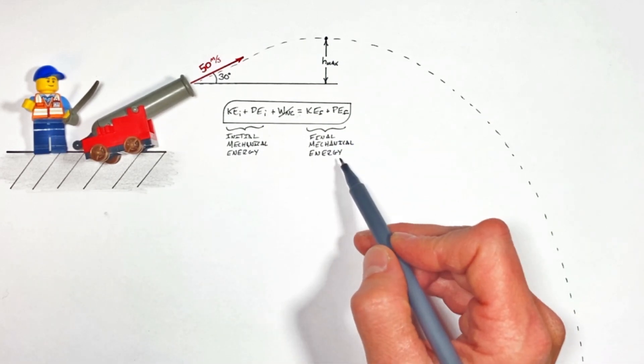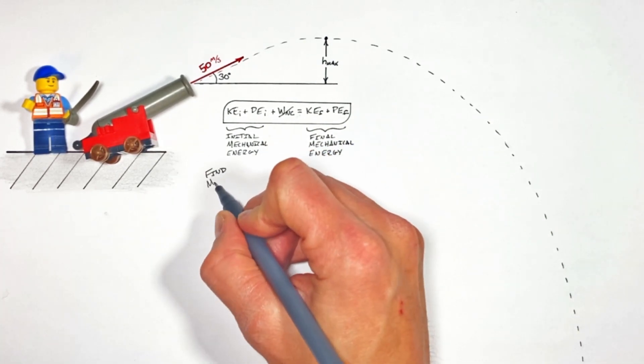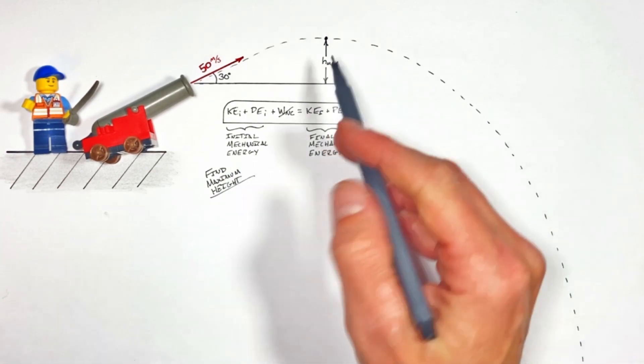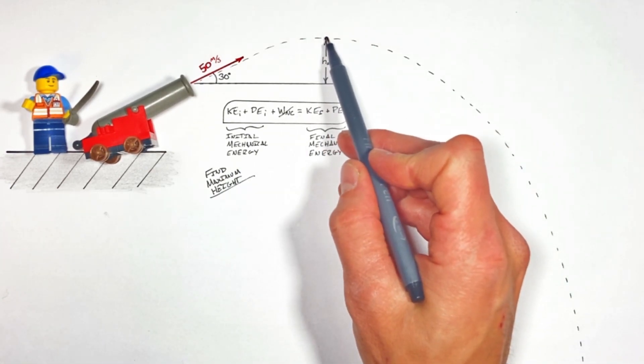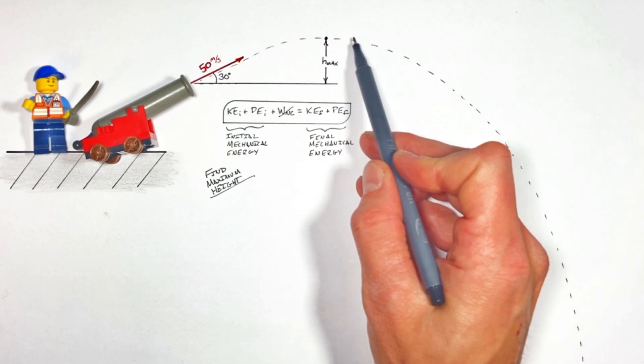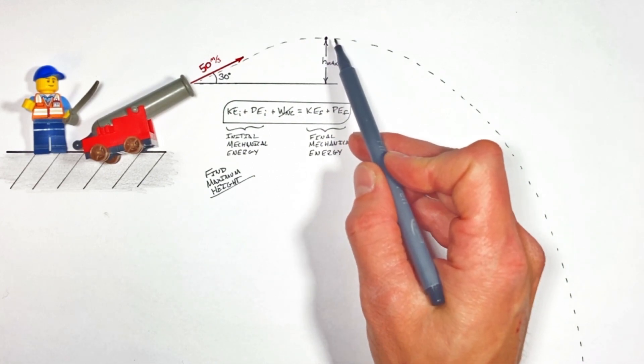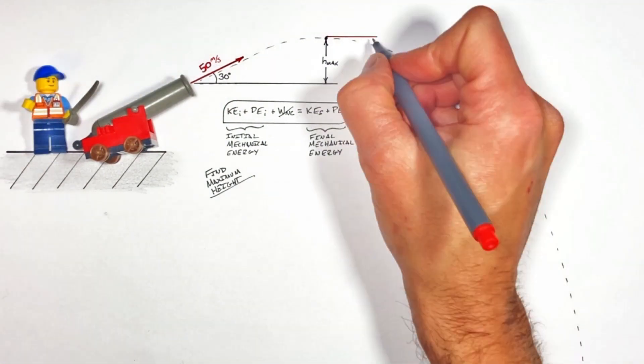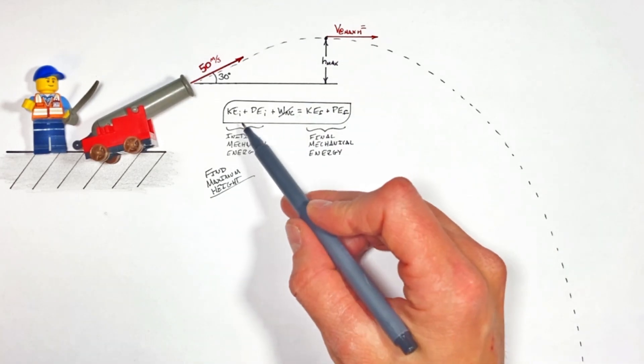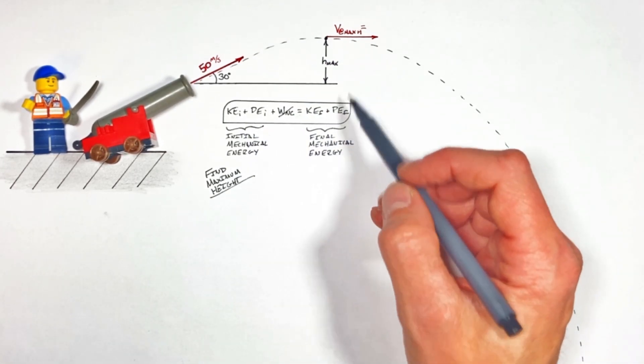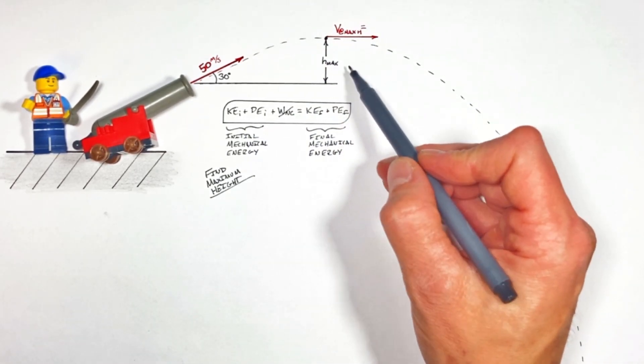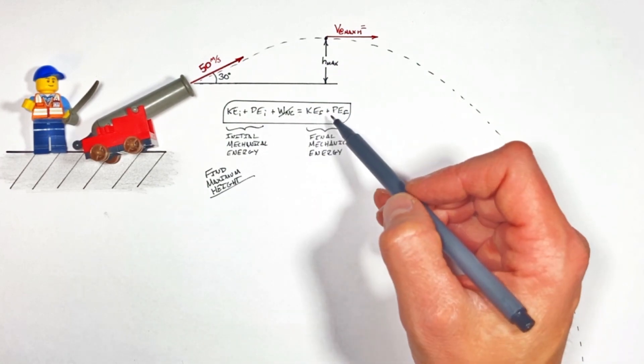To solve for the maximum height, the first thing we're going to need to do is figure out just how fast our projectile is going to be moving when it reaches its position of maximum height. We're not going to be using the conservation of energy right out of the gate to solve for this velocity at maximum height.